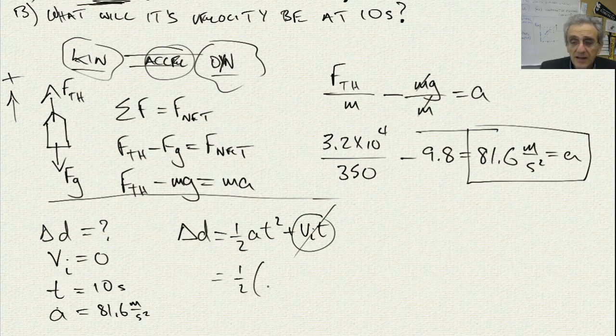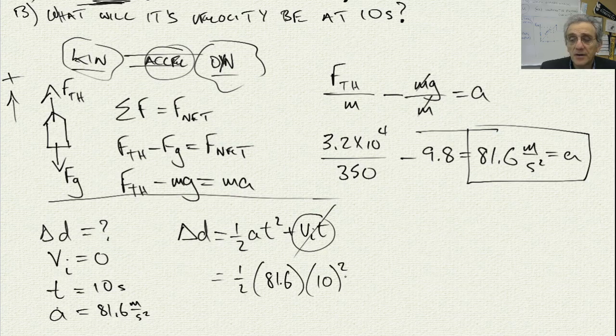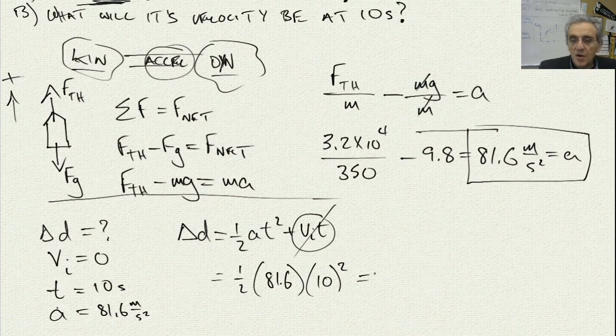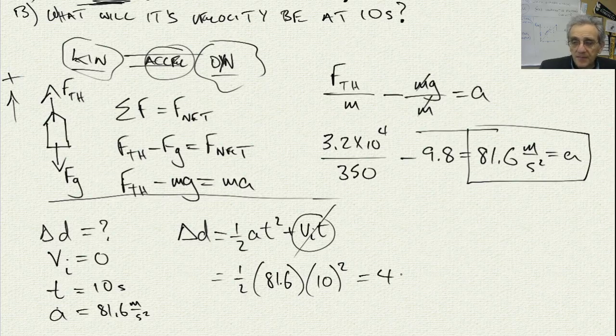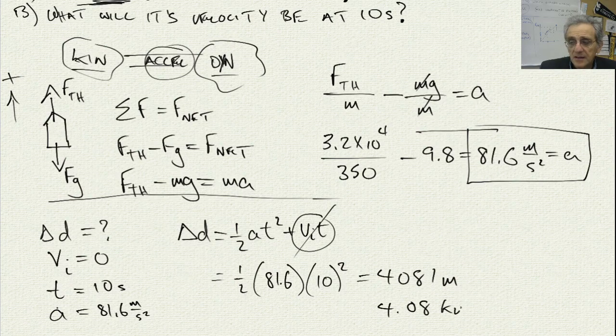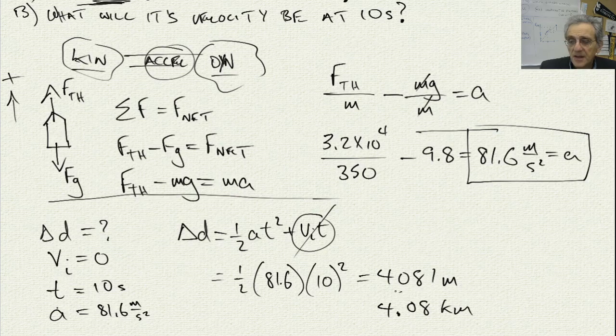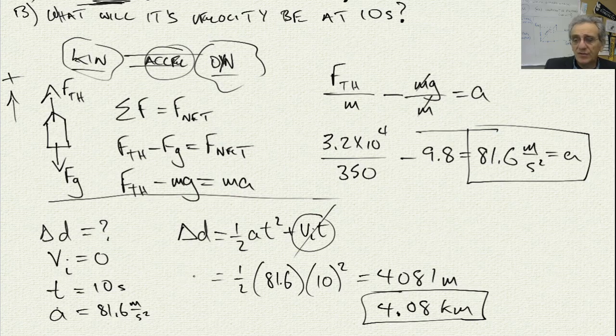And now I can have one-half, 81.6 times T squared. And that's going to give me 4,081 meters, or I can say 4.08 kilometers. That is going to be the height. So in 10 seconds, this rocket has traveled 4 kilometers in altitude.